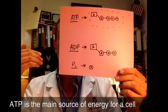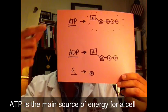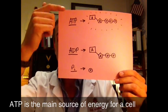So if you need to send a nervous signal, if you need a muscle to contract, if you need to make something in a cell, ATP is what powers that process.